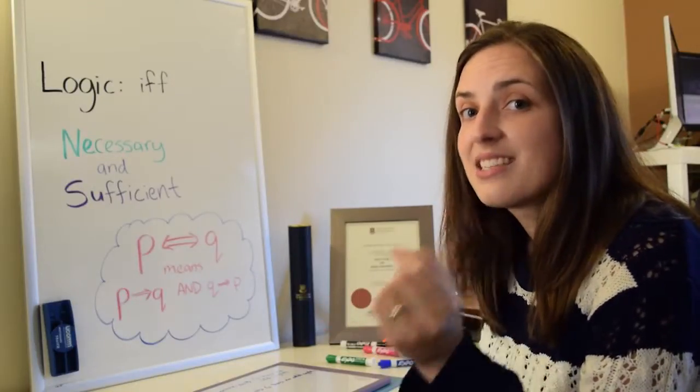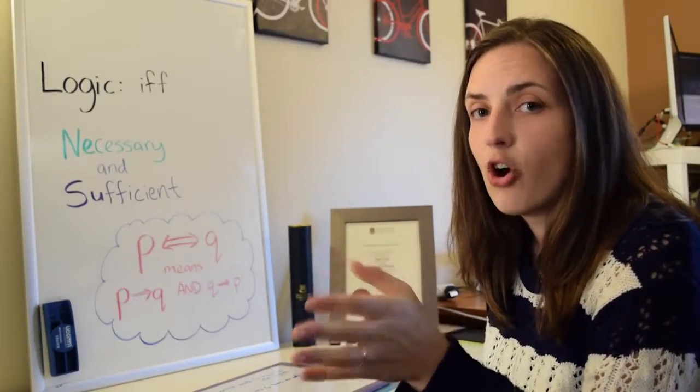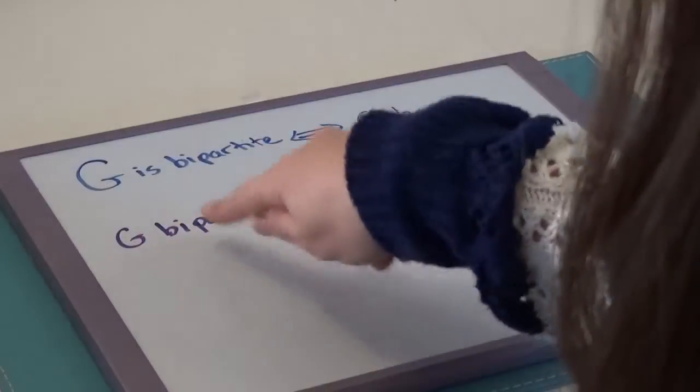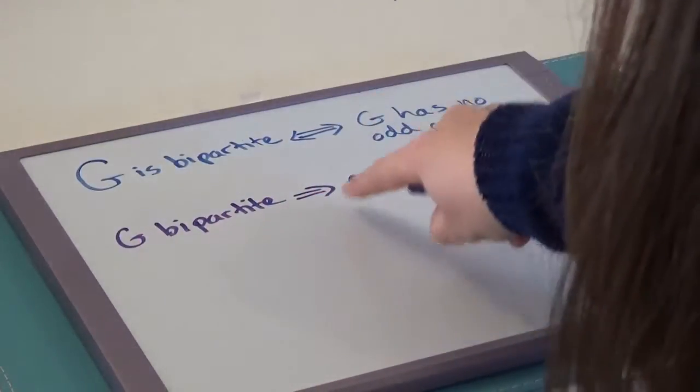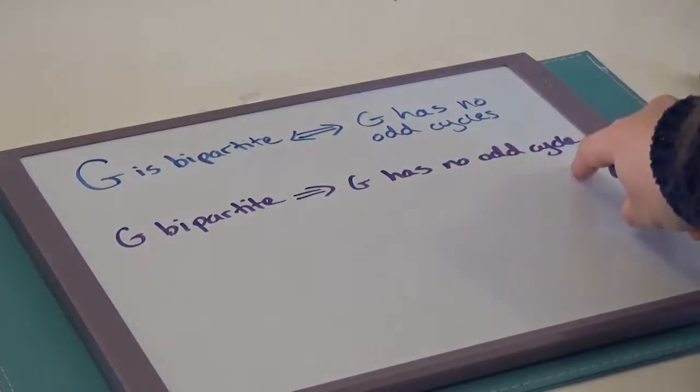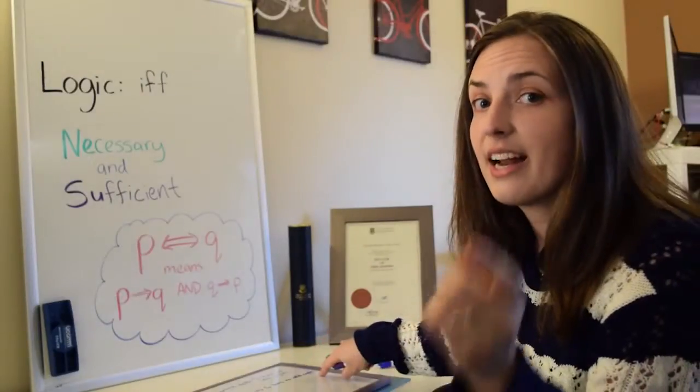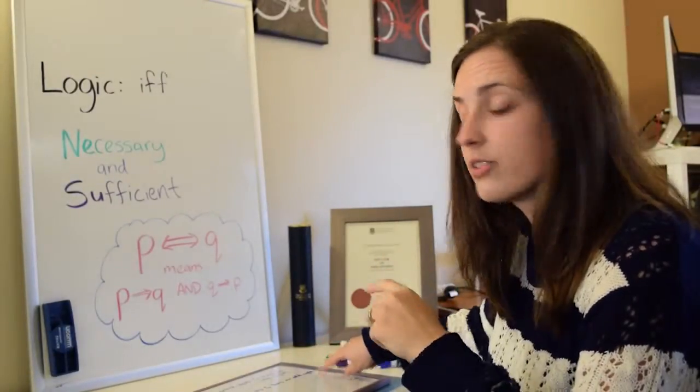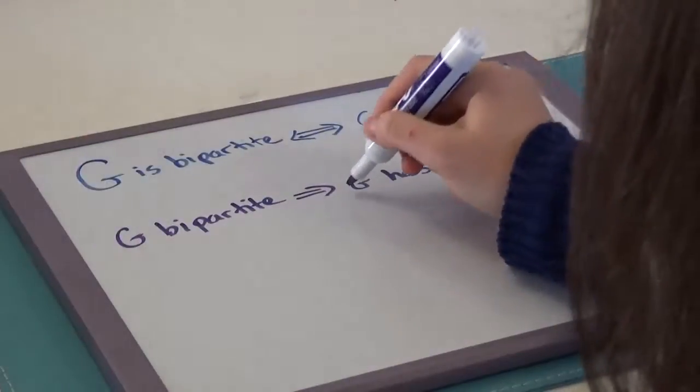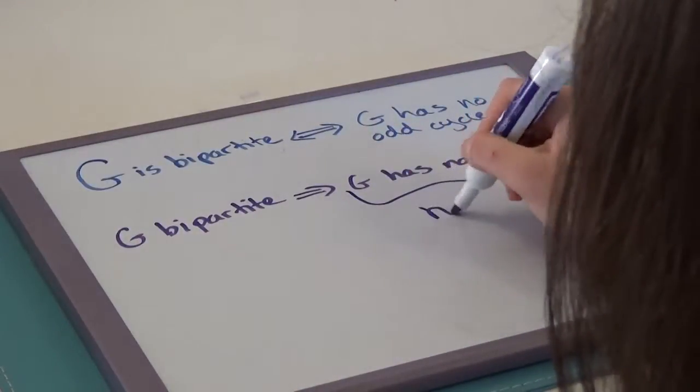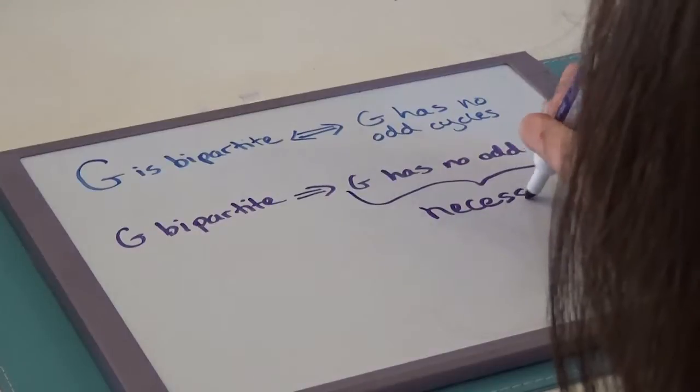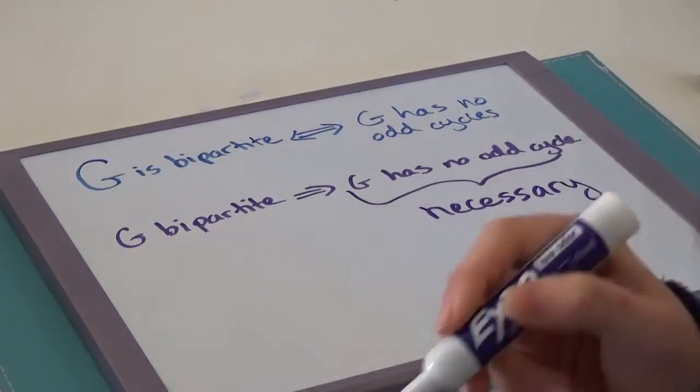Then we would say that a necessary condition is having no odd cycles. Because if it is bipartite, then it's necessarily having no odd cycles. Because anytime it's bipartite, it has to have no odd cycles. So that means that this part right here is a necessary condition for the graph to be bipartite.